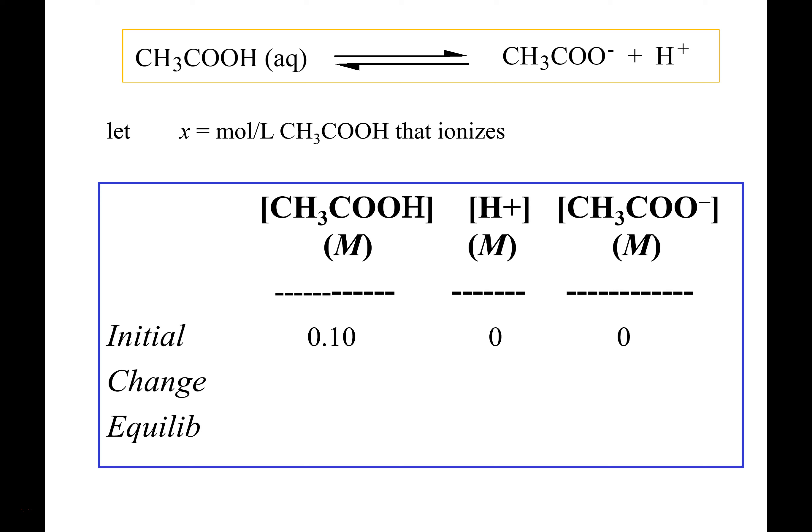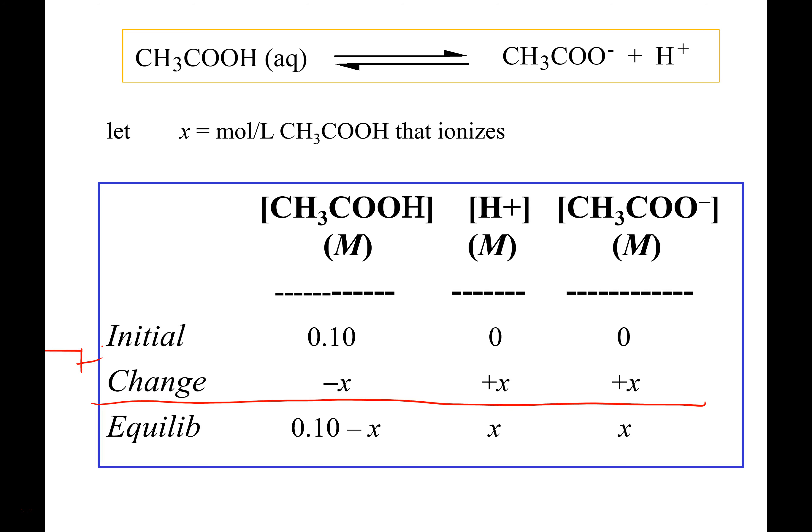We're going to say there's no hydrogen ion initially. The changes will be negative X, plus X, plus X. At equilibrium, the weak acid is 0.10 minus X, the hydrogen ion is X, and the CH₃COO⁻ is also X. This one's a little different than the last problem — last time we had the hydrogen ion concentration from the pH, but we're after that this time. So the only thing to do is take these equilibrium concentrations and plug them back into the Ka expression.